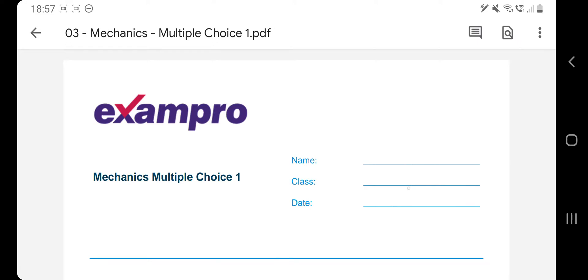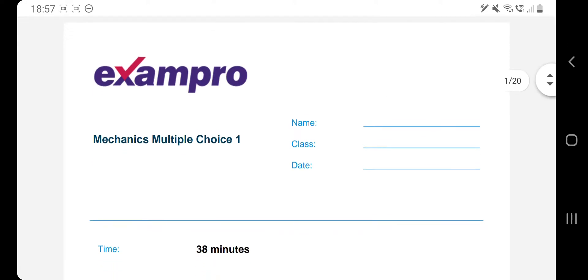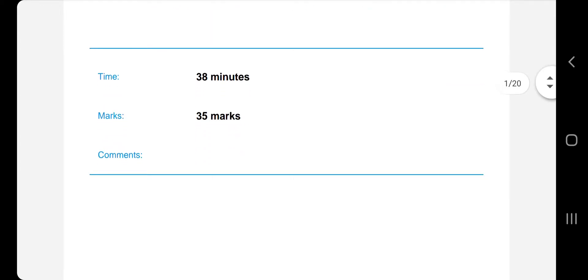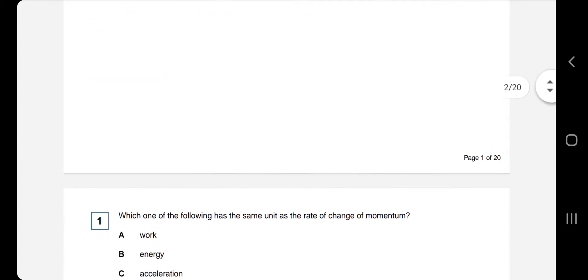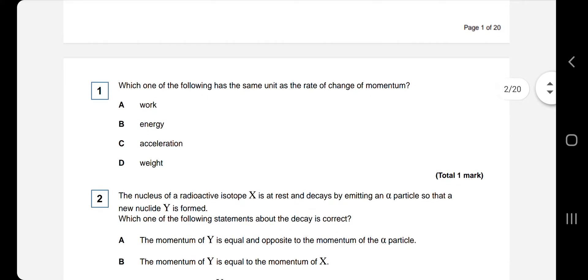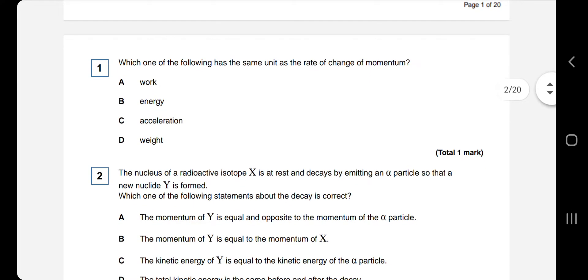This is Mechanics Multiple Choice 1, AQA examination questions, 35 marks in total. Don't worry about the time saying 38 minutes, these can take a considerable amount of time, especially when you're new to doing multiple choice questions. So what I shall do is go through the answers, explain each one, and at any point in time if you wish to attempt the question, which is what I would advise you to do first, just pause the video and then when you want an answer, see if you're correct, just play it and I'll explain it.